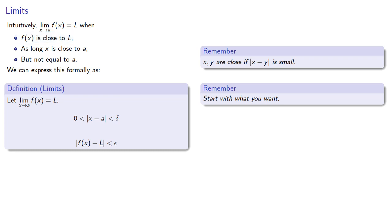So we might phrase it this way: for any epsilon greater than zero, there is a delta where, if x is close but not equal to a, then f of x is close to L.